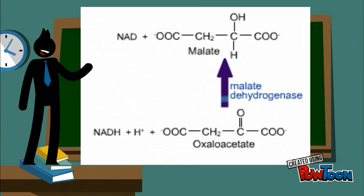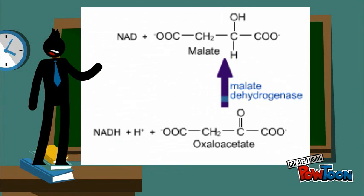Oxaloacetate cannot get out of the mitochondria directly, but first has to be converted to malate by the same malate dehydrogenase used in the TCA cycle.